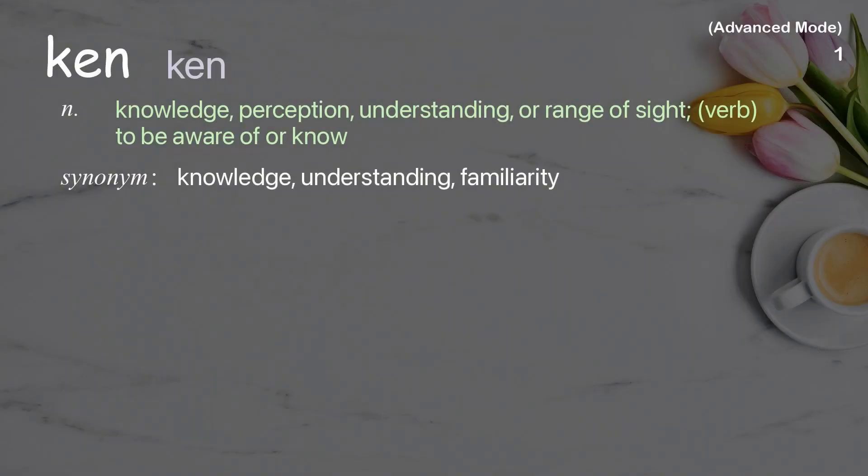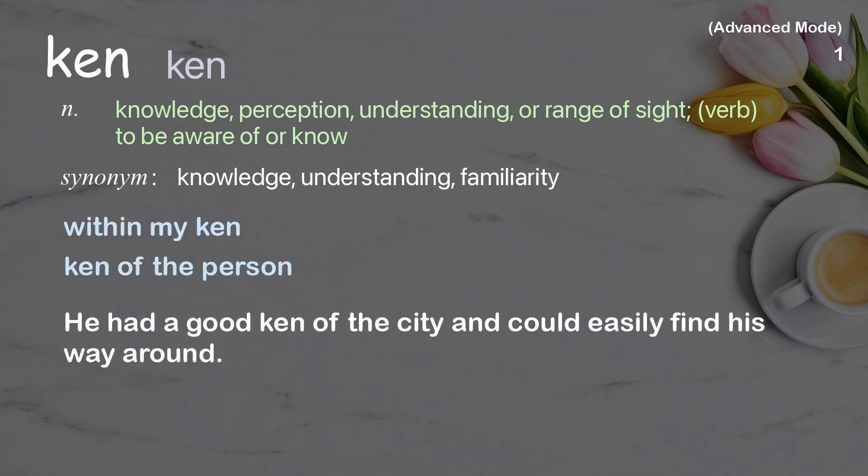Ken. Noun: knowledge, perception, understanding, or range of sight. Verb: to be aware of or know. Examples: within my ken; ken of the person; he had a good ken of the city and could easily find his way around.